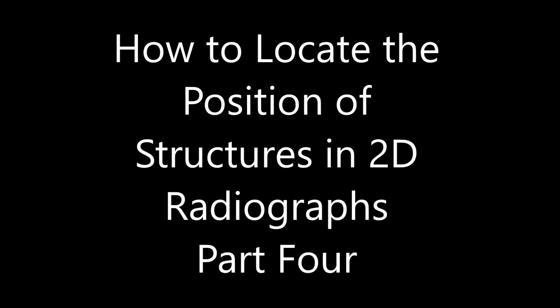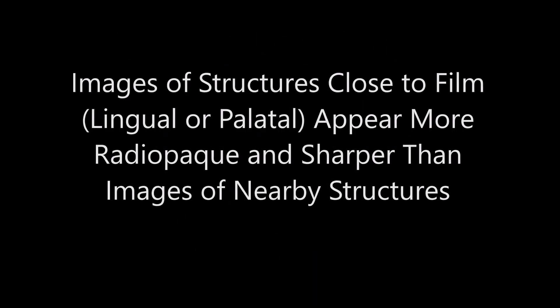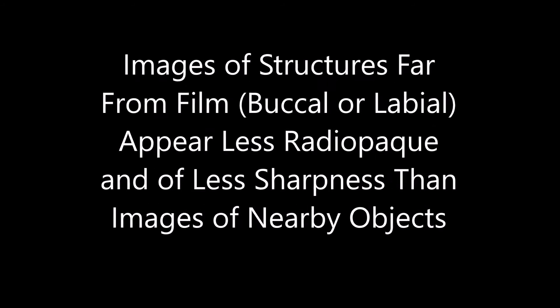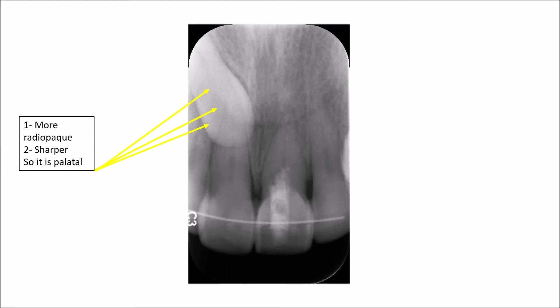Welcome to another video. In this video we are going to show two cases to help us in locating an impacted tooth — whether it is located in a buccal or in a palatal position in reference to the adjacent teeth. This radiograph shows a periapical radiograph of the central incisors and it shows an impacted canine. From this 2D radiograph, you cannot tell whether this impacted tooth is located in a palatal or buccal position, so that you can open your flap and do the surgery to take the tooth out.